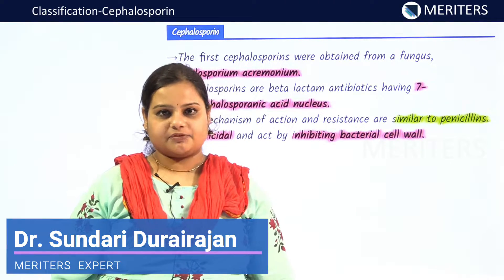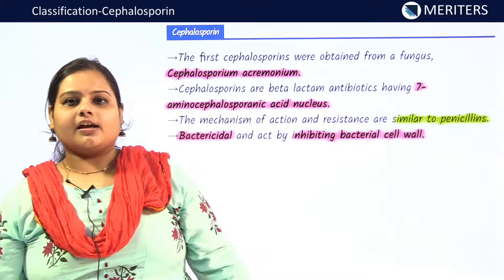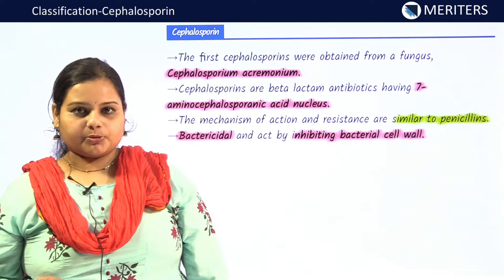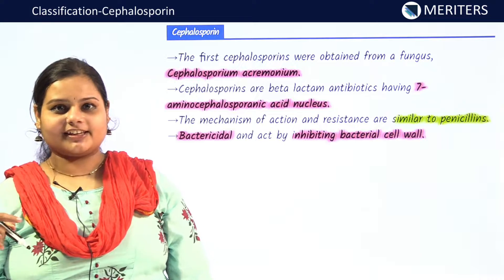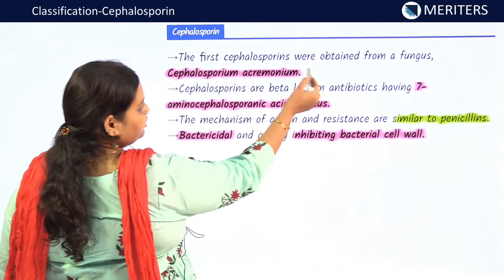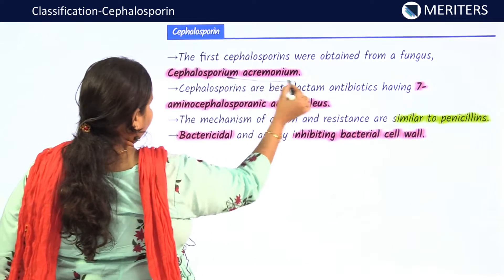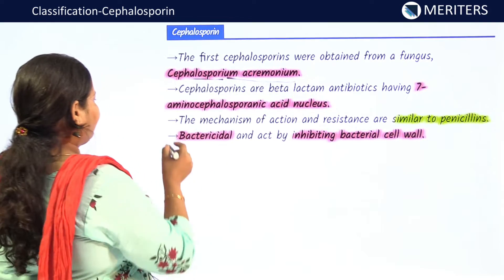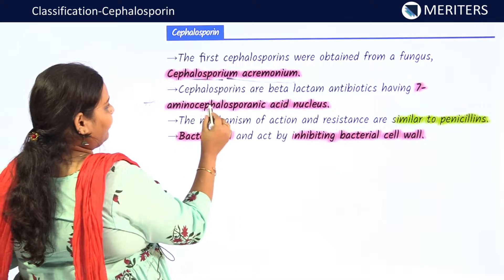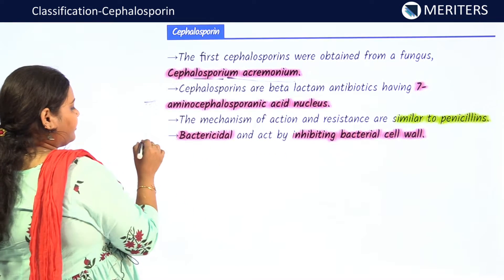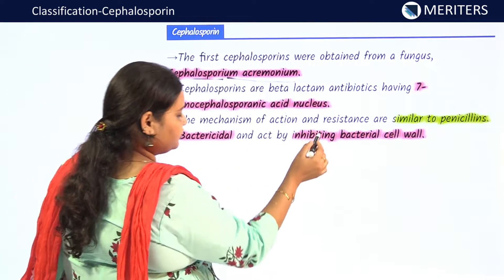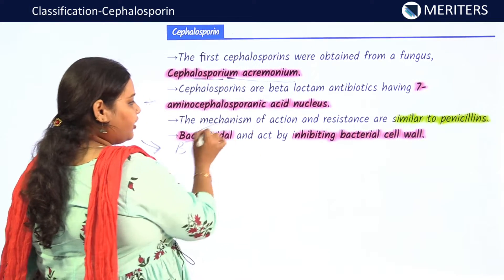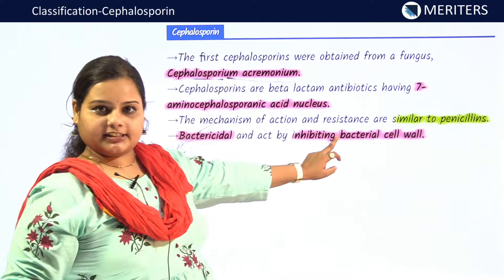In this session we will be learning about cephalosporins — how they are obtained, how they act, their classification, generations, clinical uses, and antibacterial spectrum. Cephalosporin was first obtained from a fungus called Acremonium cephalosporium. They are beta-lactam antibiotics having a specific nucleus called the seven amino cephalosporanic acid nucleus. Their mechanism of action and resistance is very similar to penicillins — they are bactericidal, killing bacteria by inhibiting the bacterial cell wall.